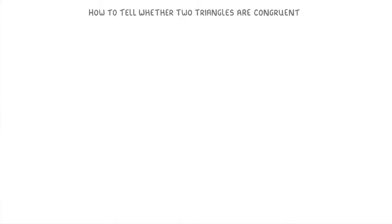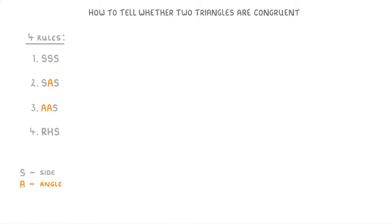Instead of just looking at a pair of triangles and trying to see if they look the same or not, we need to see if the two triangles fulfill one of these four rules. In all of these rules, the S's stand for side, A stands for angle, R stands for right angle, and H stands for hypotenuse.